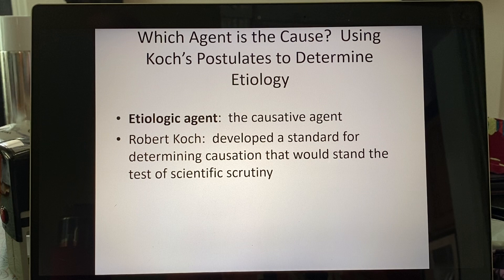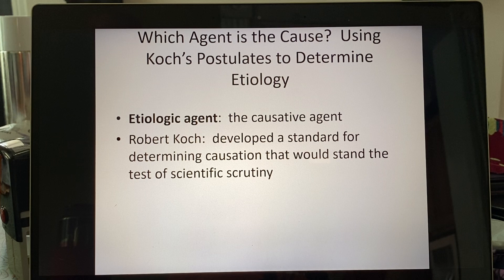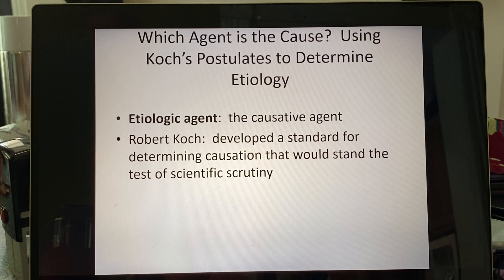Anytime an organism has been proven to cause a particular disease, it's because it has met Koch's postulates. Another term you're going to hear is etiology. Etiology basically means causing the disease, so when we say etiologic agent, it simply means whatever microbe is causing that particular disease. Let me go through Koch's postulates in word form and then in graphic form.